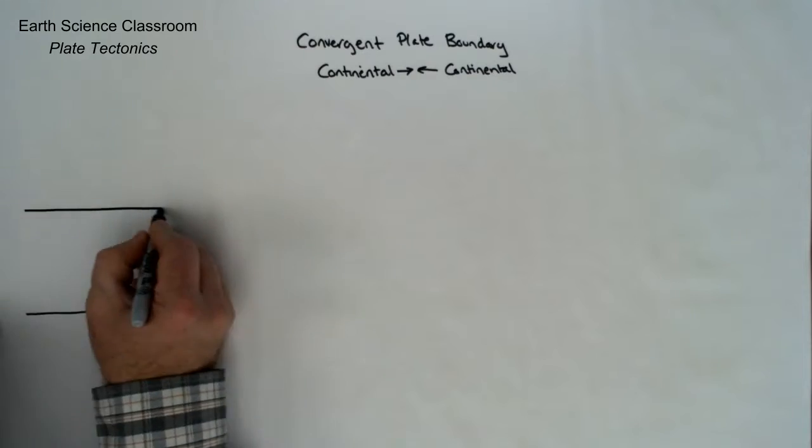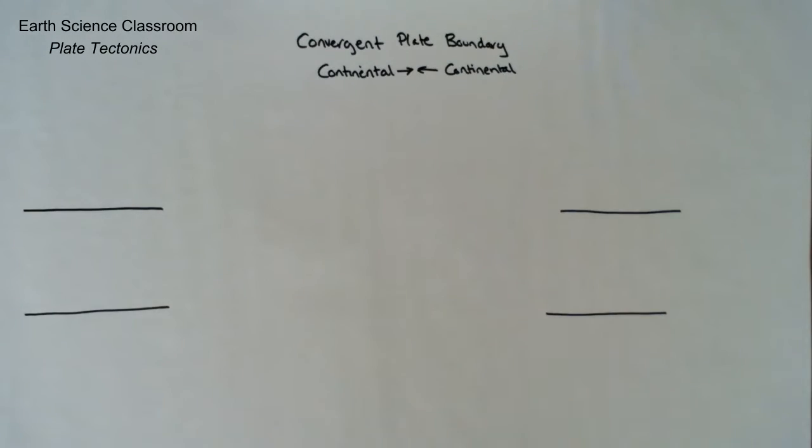So two plates of similar or the same composition colliding on the Earth's surface and looking at the natural features and geomorphology that come about from this type of plate boundary.